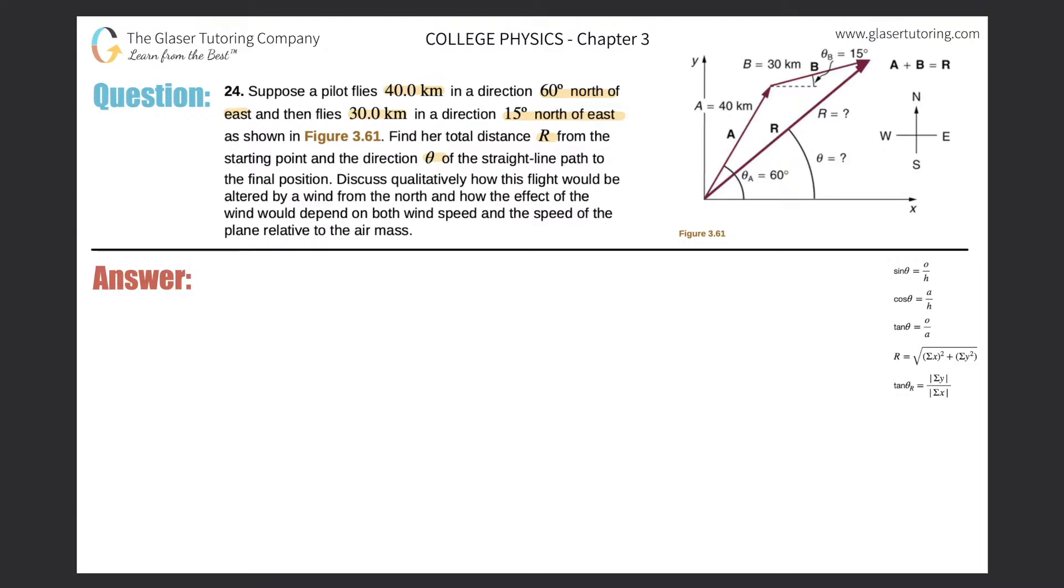Alright, so basically the structure of this problem is that they're giving you two vectors. I'll call this 40 kilometer vector vector a and this 30 kilometer vector b. And what we're trying to do is given those two vectors, we're trying to find her resultant vector and the angle. So in order to solve this particular problem, basically what we have to do is sum up the components of vector a and vector b so that we can find the components of the resultant. And then we can find the resultant vector from those resultant component vectors.